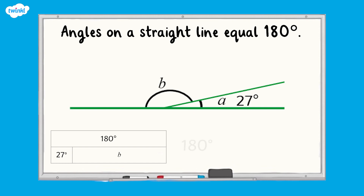Angle B will be 180 degrees subtract 27 degrees, which is equal to 153 degrees. Angle B is therefore 153 degrees. Let's have a look at another question.